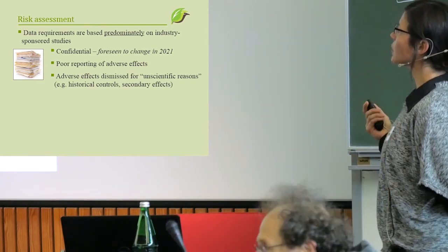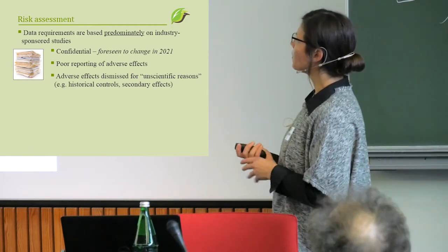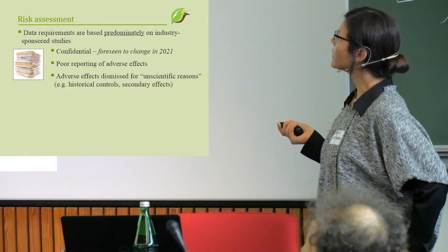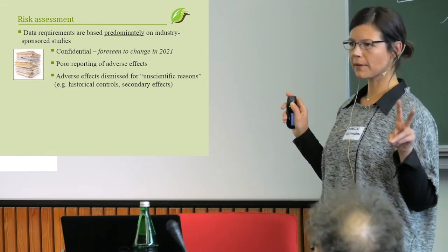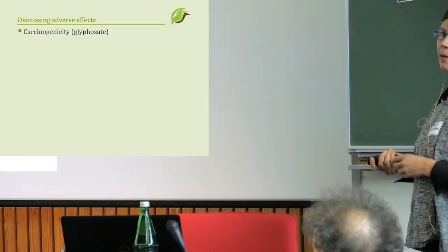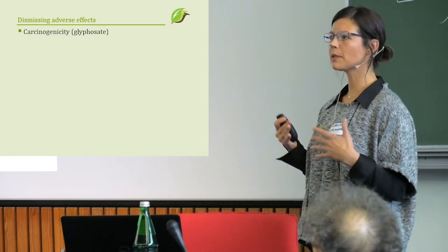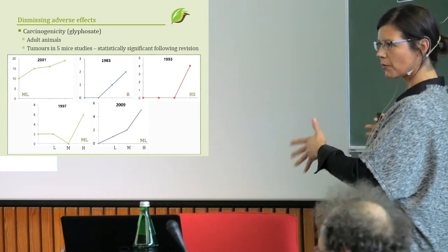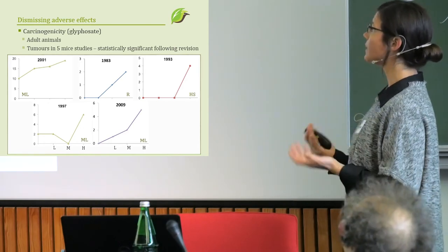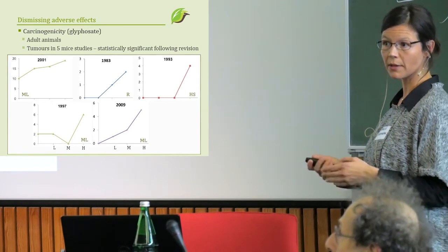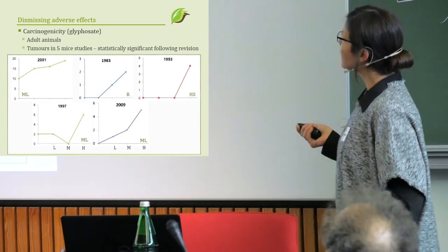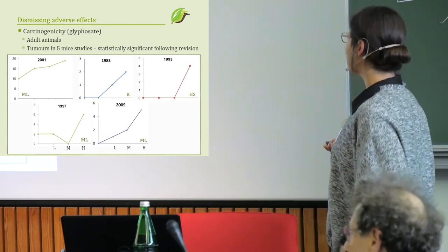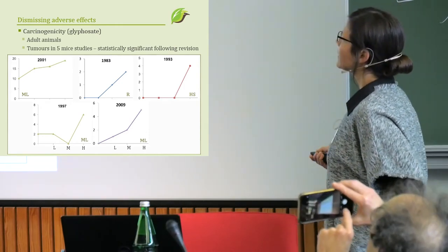We see poor reporting of adverse effects in these studies, and adverse effects are dismissed with what we call unscientific reasons. A very classic example is glyphosate: the WHO's International Agency for Research on Cancer found it is probably carcinogenic, which should result in a ban in Europe. However, European institutions found no carcinogenic risk. In five specific studies, researchers found malignant lymphoma, renal tumors, and hepatocellular tumors — industry studies reporting increases in tumors.